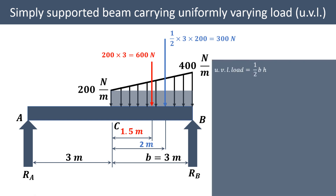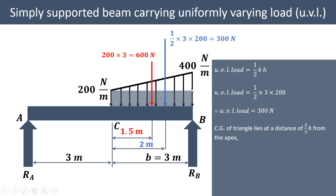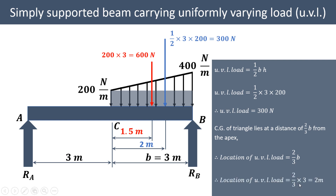The UVL load is one half base into height — that is the area of the triangular distribution. Base is 3 meters and height is 200 Newton per meter, so the total UVL point load is 300 Newton. The centroid of the triangle lies at two-thirds of the base from the apex. So two-thirds into 3 gives 2 meters. Therefore the UVL load of 300 Newton acts at a distance of 2 meters from the apex.